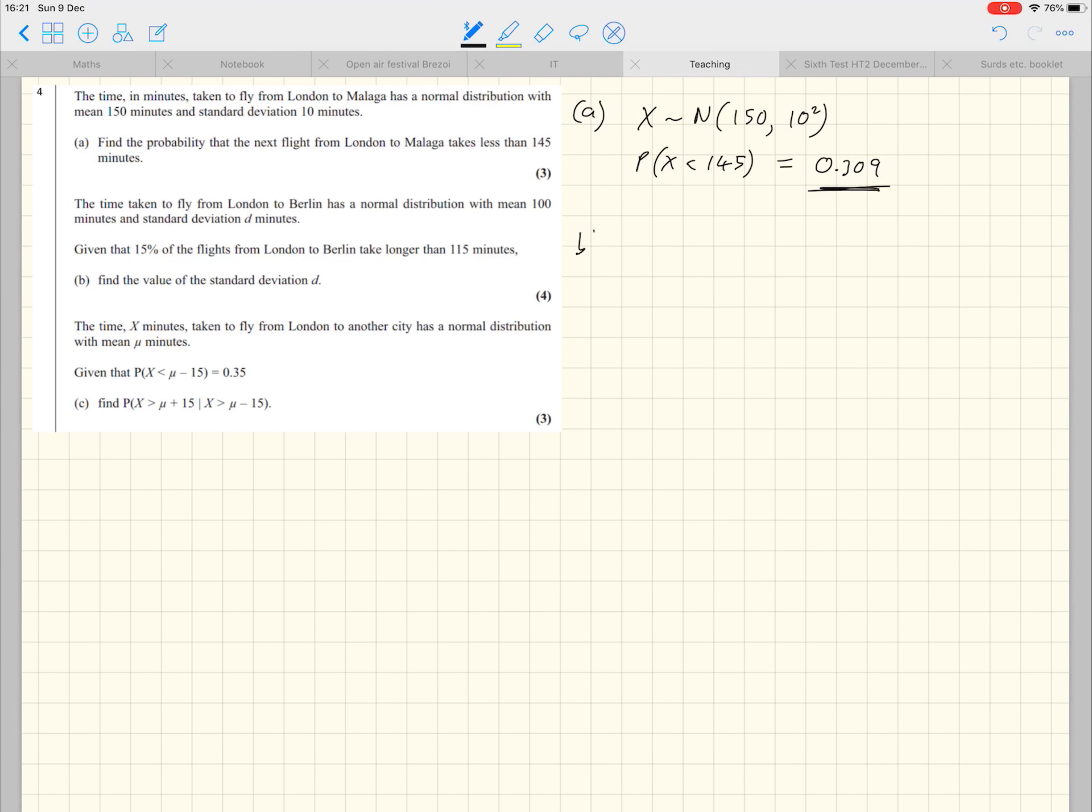Part B, a little bit more interesting question. I'm going to find a new variable here, Y. Let Y be the time taken for the next flight from London to Berlin. We're told that it's normally distributed with mean 100 and standard deviation d. Now they use this word given. Be careful, this isn't given like an A given B question. They're just giving you a piece of information and asking you to use that.